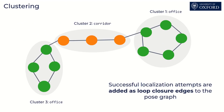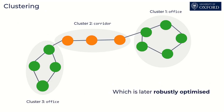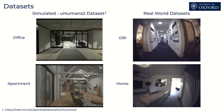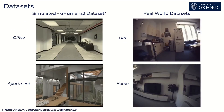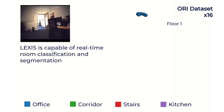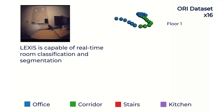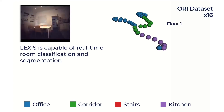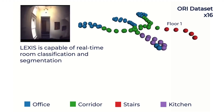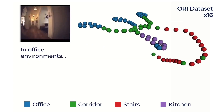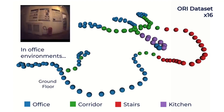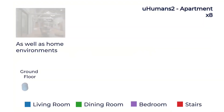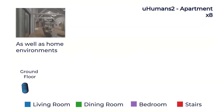All successful attempts are added as loop closure edges, which are later optimised. We demonstrate our system in indoor real-world and simulated datasets. We demonstrate our ability to segment and classify rooms in office environments, such as this custom dataset recorded in our institute, and public simulated datasets.